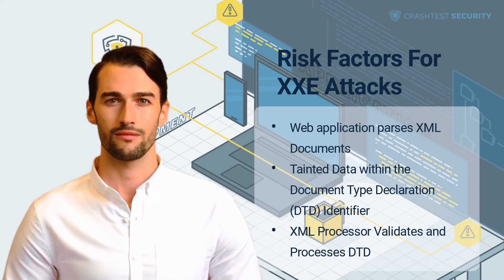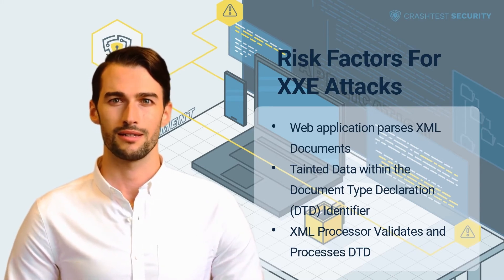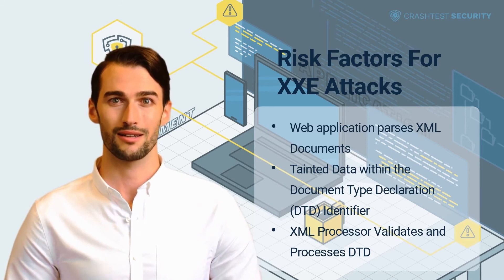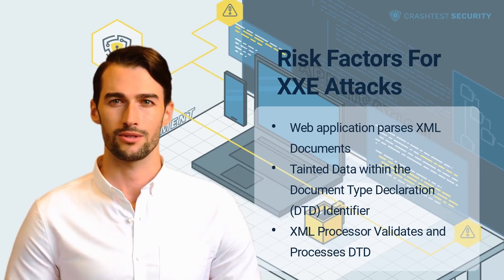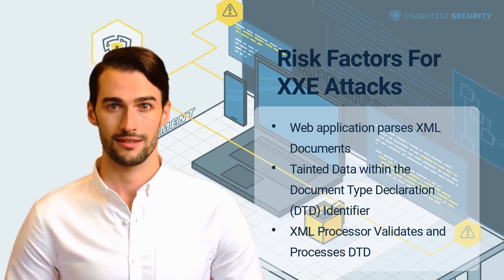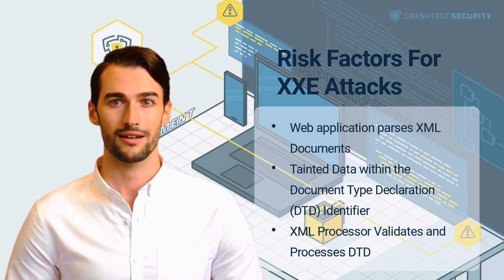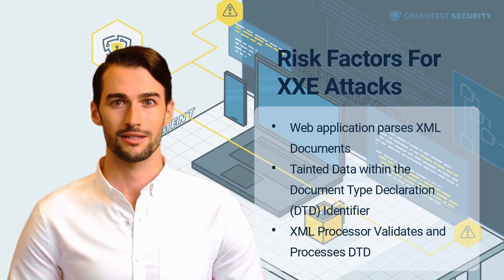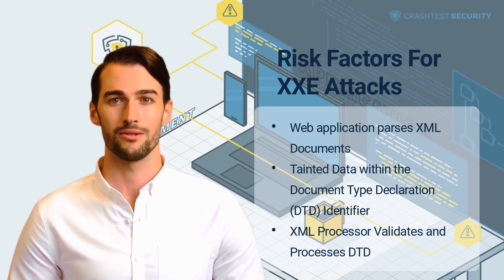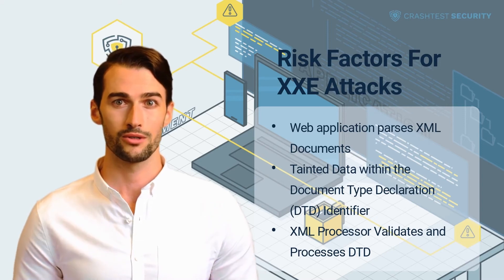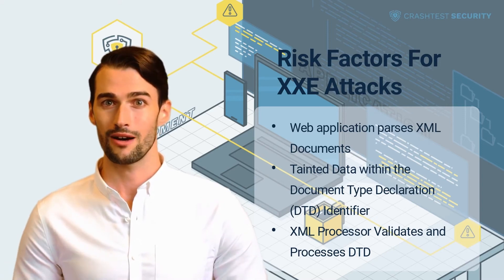Third, if DTD validation is enabled for XML processing, attackers can use XML documents to access local resources and stop them from returning data. Additionally, if the XML parser resolves external entities within the DTD, attackers can expose the contents of sensitive files by making requests using a malicious system identifier URL.